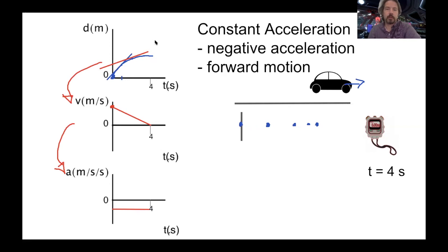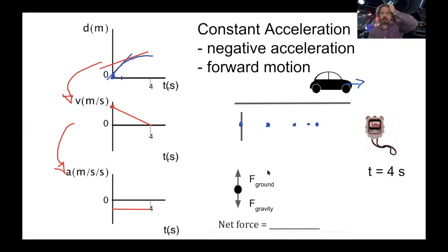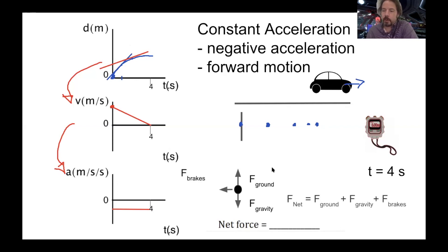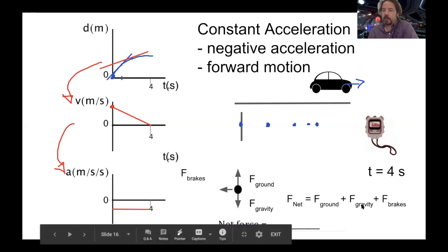Now let's look at the forces. Same basic setup, but now we have the brakes acting on the car. If we add all those forces up, gravity and normal force cancel out, and we're only left with the brakes causing the car to slow down.